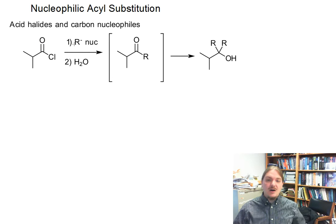Acid halides can react with carbon nucleophiles, things that are R minus, that act like carbon ions, to form ketones initially. Then depending on the nature of the nucleophile, ketones can react further with carbon nucleophiles to form alcohols.